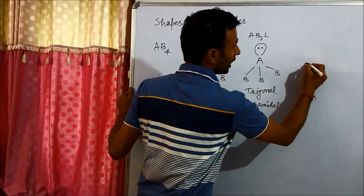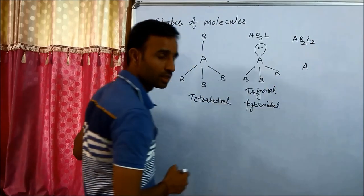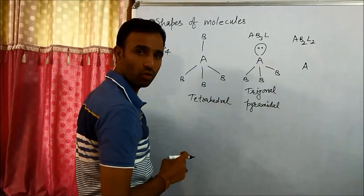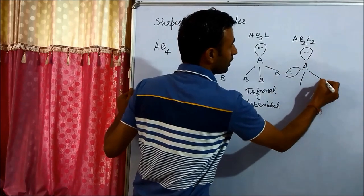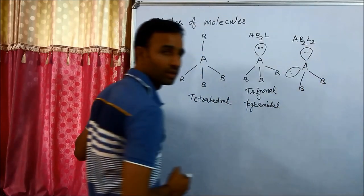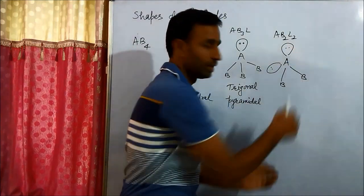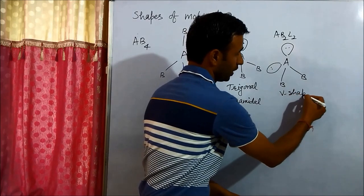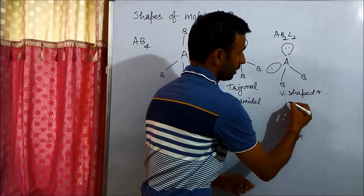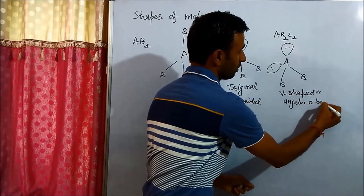If we have two bond pairs and two lone pairs, then two positions are occupied by lone pairs. When we have two lone pairs and two bond pairs, the shape is V-shaped, angular, or bent.